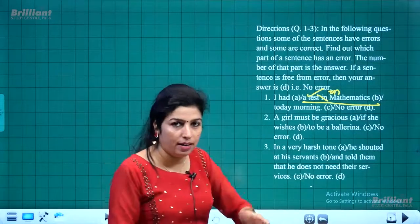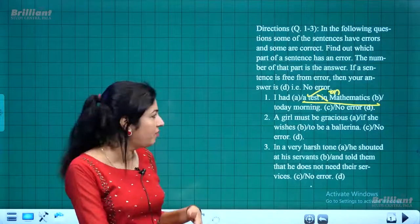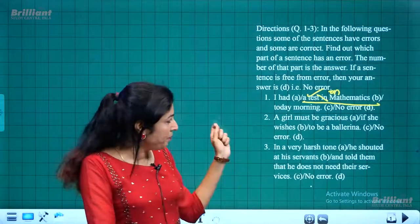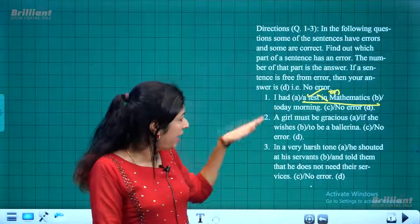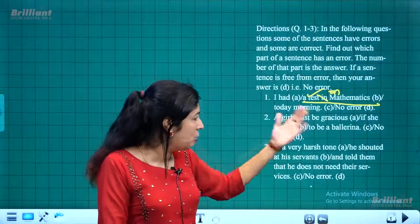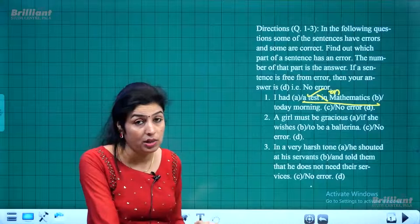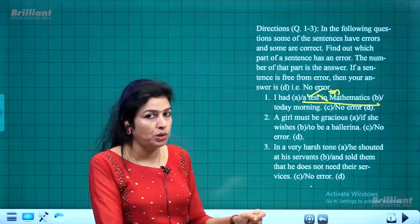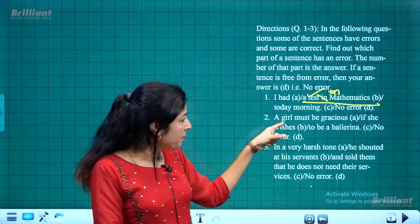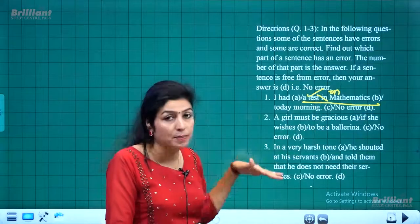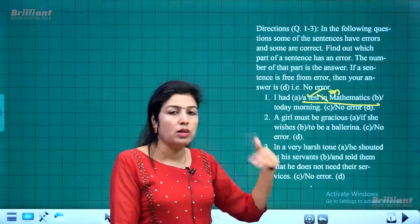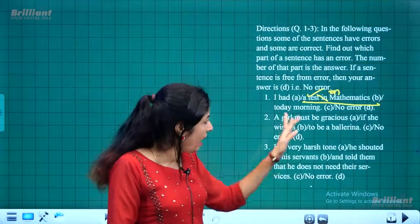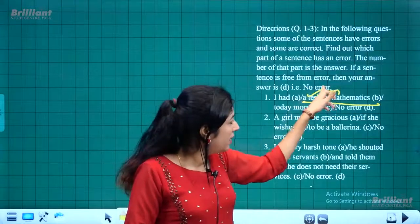As additional information: grammatically, 'today morning' is not wrong, but the more apt expression in actual speech is 'this morning.' However, grammatically there is no error there. The error was only in 'a test in mathematics,' which should be 'on mathematics.'